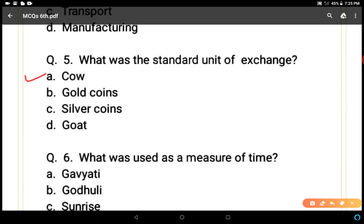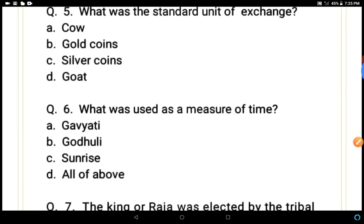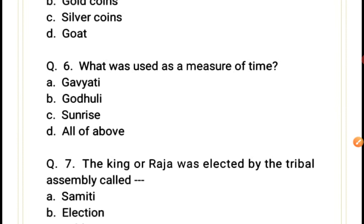Question 5: What was the standard unit of exchange? Options: cow, gold coins, silver coins, or got. Cow is the correct answer. As discussed in the extra points beyond the NCERT, the cow was the standard unit of exchange.